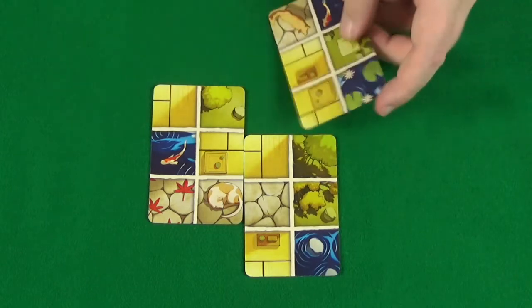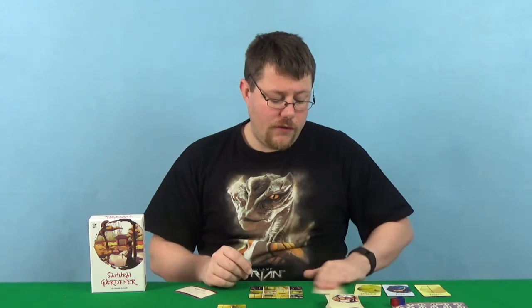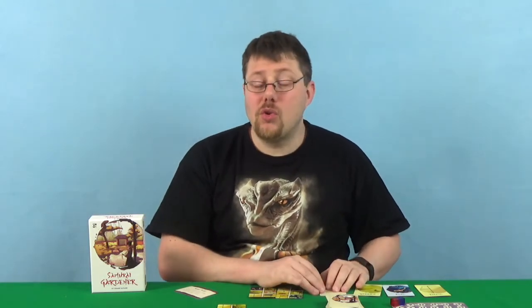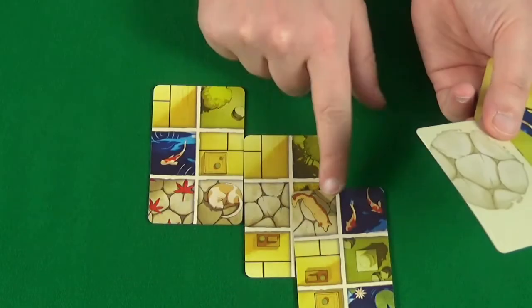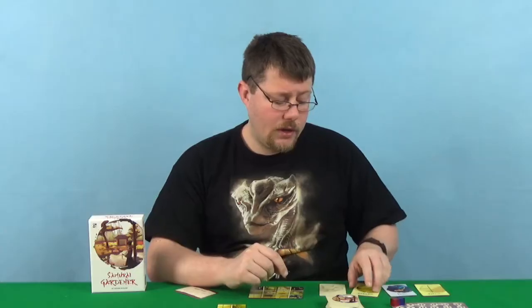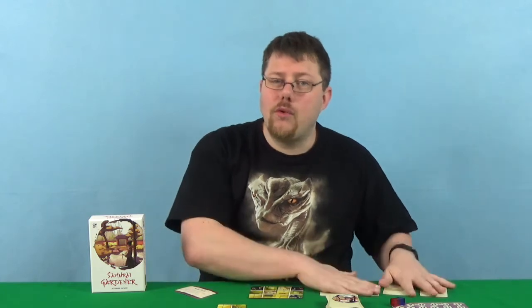Except that when you score something, you'll then flip over your feature card so it's face down. You now cannot score that type of feature again until you've scored all the others. I could still place the card, but I'd gain no points. So as you score them all and you flip them all over, once they're all flipped, they immediately all unflip.